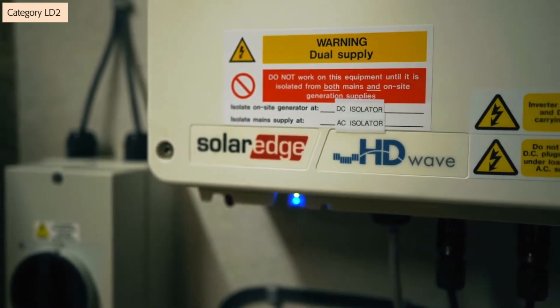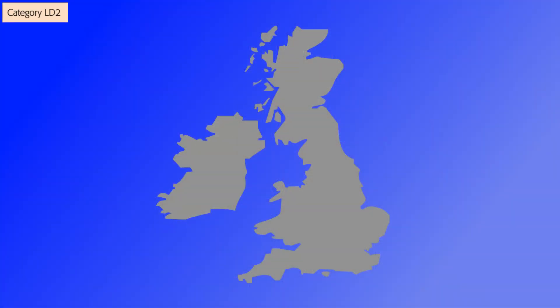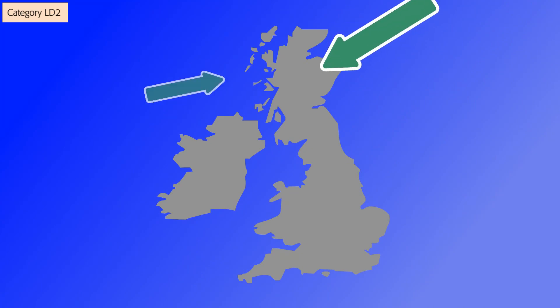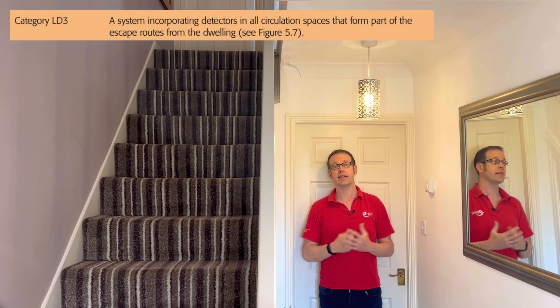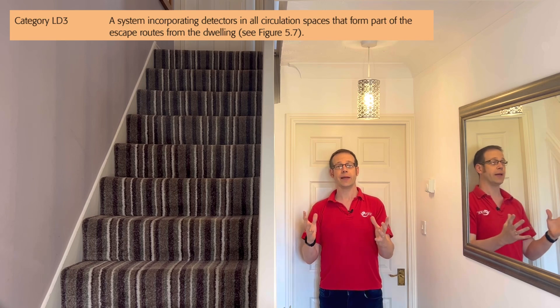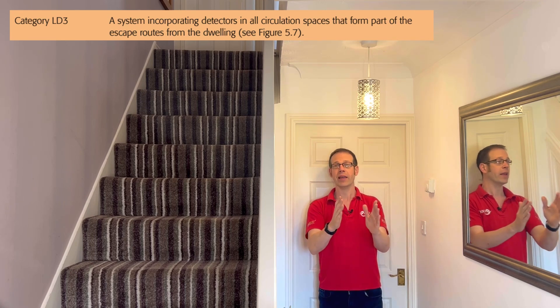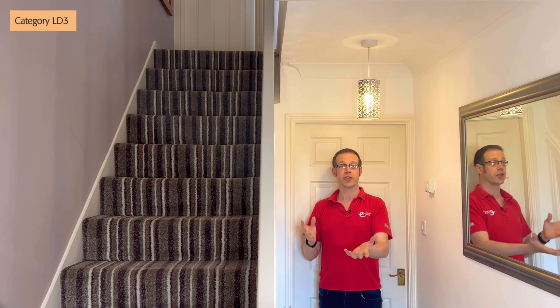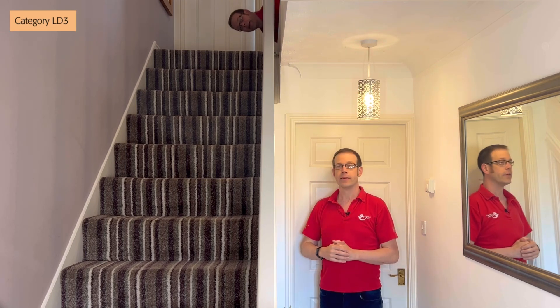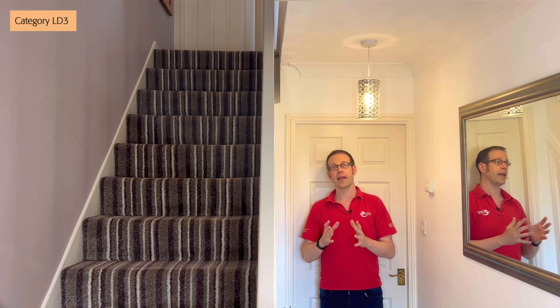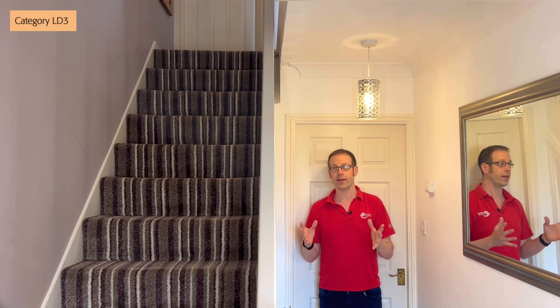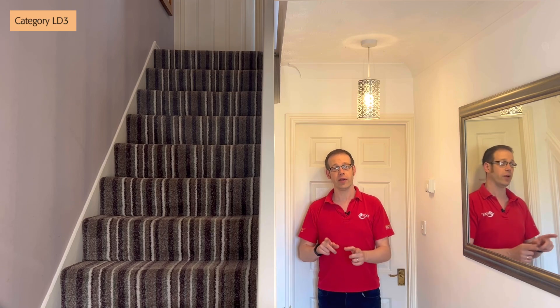The same guidance goes for lofts as with an LD1 system — if it has an inverter or similar for a PV system then it should have smoke alarms installed. It's worth noting that in Scotland and Northern Ireland, LD2 is the starting point for all new builds and may need to be higher in certain circumstances. In England and Wales the starting point for all new builds is category LD3, which is a system incorporating detectors only in all circulation spaces that form part of the escape route from the dwelling. So in our example home you would only need to install detection in the hallway and landing to cover the escape routes — no other room would require one. This is purely to alert people that their route out of the building is under threat from a fire.